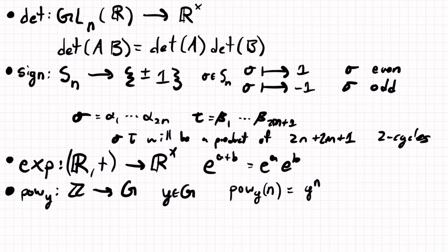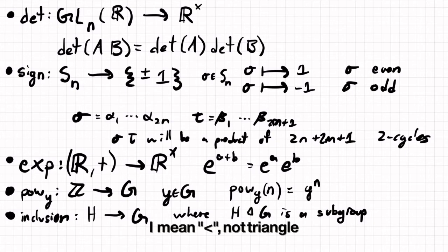And then maybe another example is inclusion. So inclusion from a subgroup h into a group g, where h is a subgroup of g. I guess I can write this notation with the triangle here. H is a subgroup of g. And this will also be a morphism.